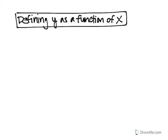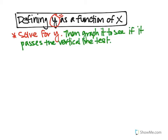The last part of the notes is going to be defining y as a function of x. All you're going to be doing is solving for y. If they say y as a function of x, that means you want the equation to be in the form y equals, so you're going to solve for y. Then you want to graph it to see if it passes the vertical line test — to see if after you solve for y, it actually is a function. They're going to give you an equation that's not already solved for y.